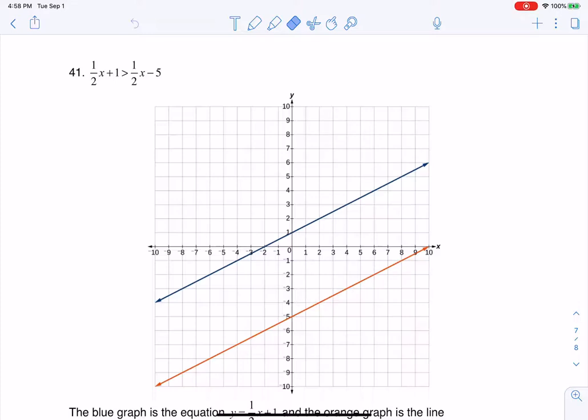So I'll totally solve it graphically, but I just want to show you how this would play out algebraically. Let me just do a little algebraic stuff here. If I had 1/2x + 1 is greater than 1/2x - 5, what I could do is I could subtract that 1/2x from both sides, and when I do that, these are going to cancel here.